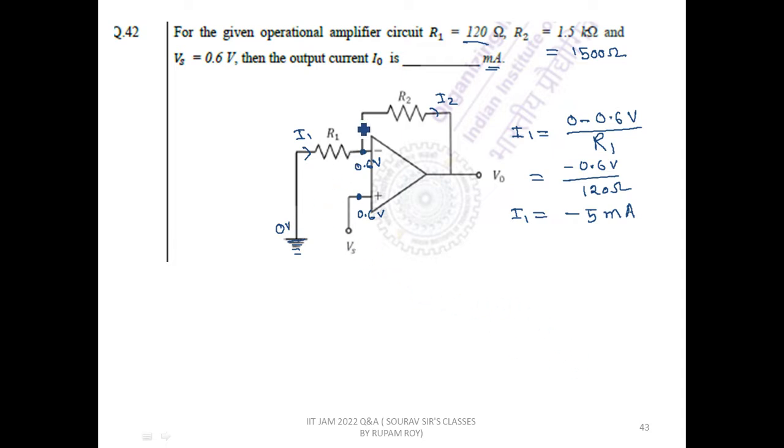We also know that in case of op-amp, i1 is equal to i2. So i2 will also be equal to minus 5 milliampere.